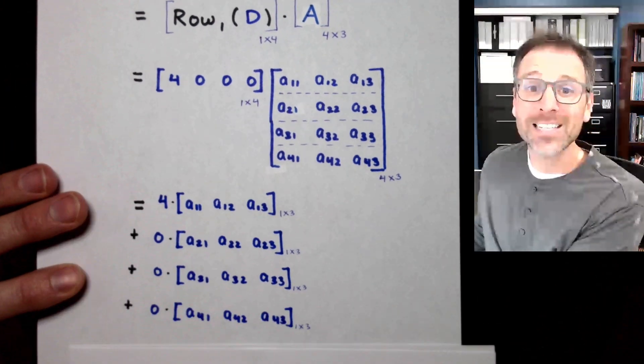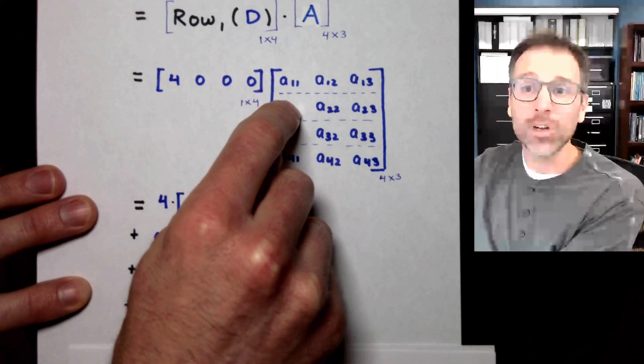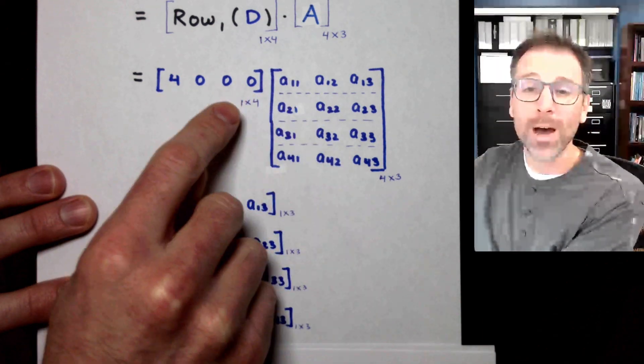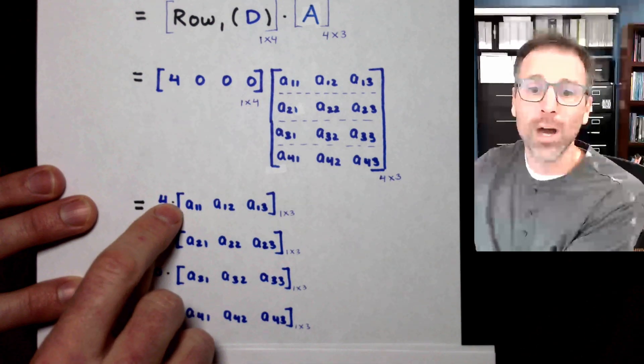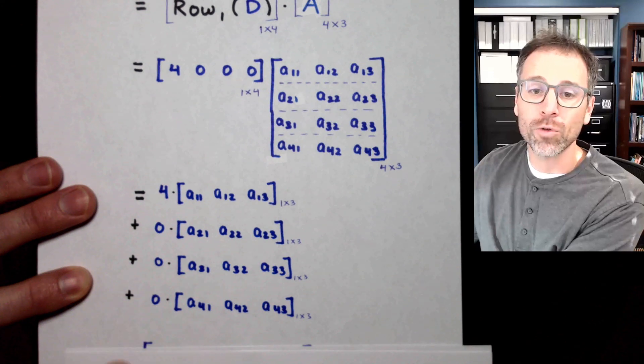Here I go with the same process. I take individual scalars in the row vector and align those with the corresponding rows in the modeling matrix. So this is going to be 4 times row 1 plus 0 times row 2 plus 0 times row 3 plus 0 times row 4.